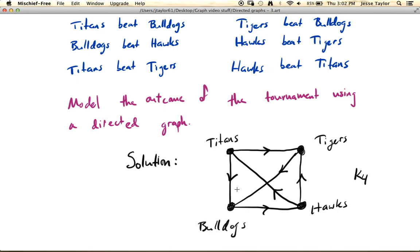The concept of path and cycle in a regular graph extends to a directed graph. If you want a path, for example, there is a Bulldogs to Tigers path, and if you want to travel along that path, you have to be going in the correct direction. So like Bulldogs to Hawks, Hawks to Titans, Titans to Tigers, or Bulldogs to Hawks to Tigers, for example.